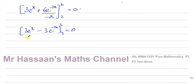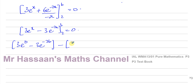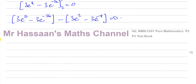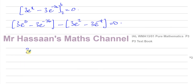Now I can put the values in. Putting in the limits, I'll have 3e to the power of b minus 3e to the power of minus 2b, then minus the bracket containing 3e to the power of 2 minus 3e to the power of minus 4, and that's equal to 0. Adding the second bracket to both sides: 3e to the power of b minus 3e to the power of minus 2b equals 3e to the power of 2 minus 3e to the power of minus 4.